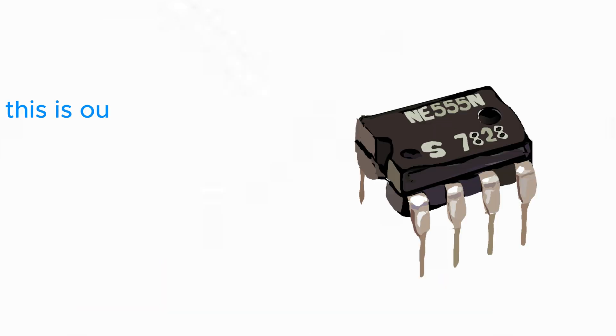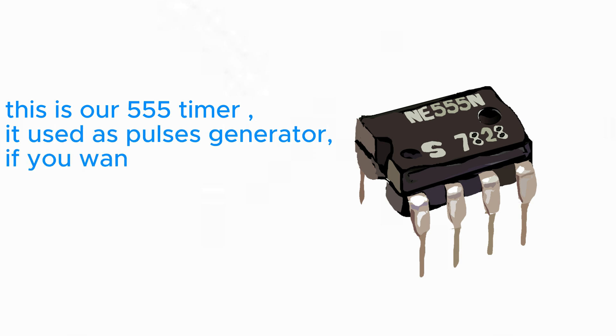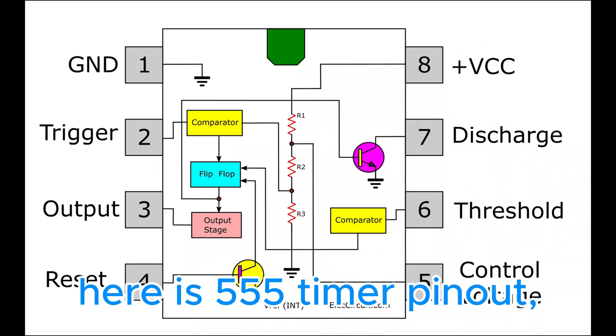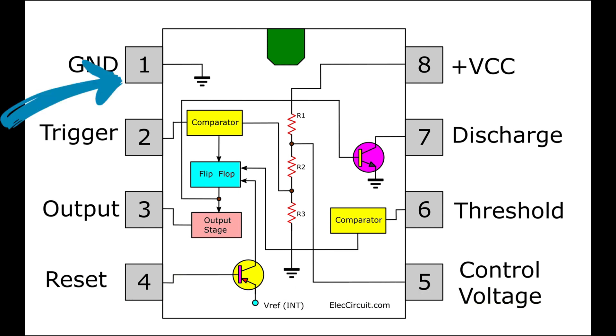This is our 555 timer. It's used as a pulse generator. If you want to know more, you will find it in this video. Here is 555 timer pinout. Pin 1 ground and pin 8 VCC for input power, in our case 12V DC. Pin 4 is reset, it is activated when the voltage on it is 0V. Pin 3 for output pulses.